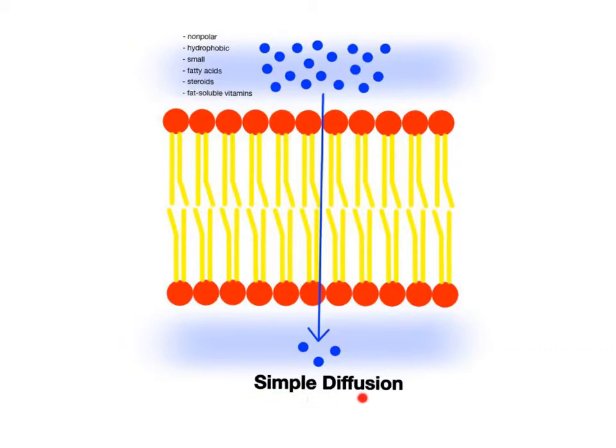Simple diffusion is the most basic of all the passive transport processes, since there are no additional membrane proteins required. Chemical substances move directly through the phospholipid bilayer. Certain types of chemicals move the fastest through simple diffusion, such as nonpolar molecules, those with no overall net charge.